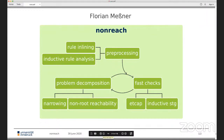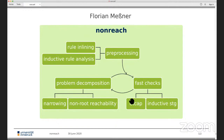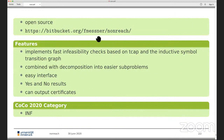NonReach, by Florian Messner, is not present but here is the overview. It uses techniques from termination analysis, estimation of dependency graphs, and narrowing techniques to modify problems. It is open source and available from its link. The easy interface can now handle 'no' results and can output certificates — so future CoCo development includes certification for infeasibility.